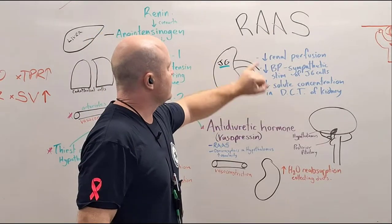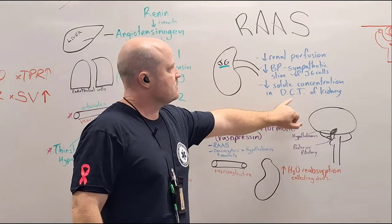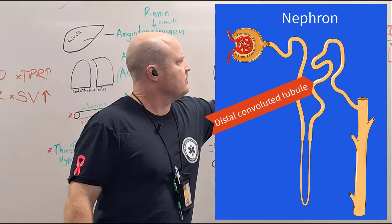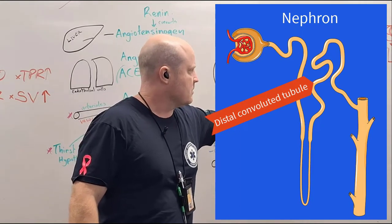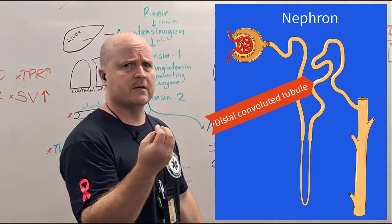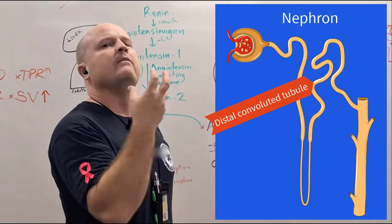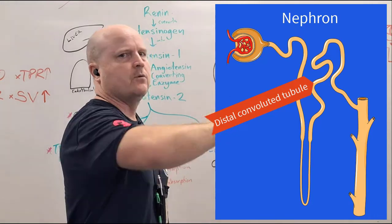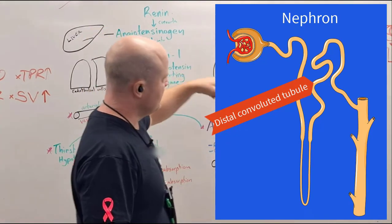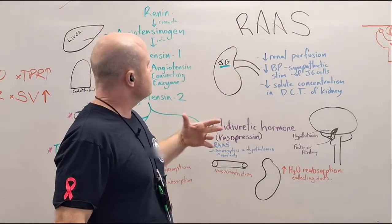The last stimulus is decreased solute concentration in the distal convoluted tubule of the kidney. If we've got less solute in our distal convoluted tubule, that means our urine is quite dilute — watery. The body is going to want to draw fluid back out into circulation. So these three things are going to stimulate the RAS.